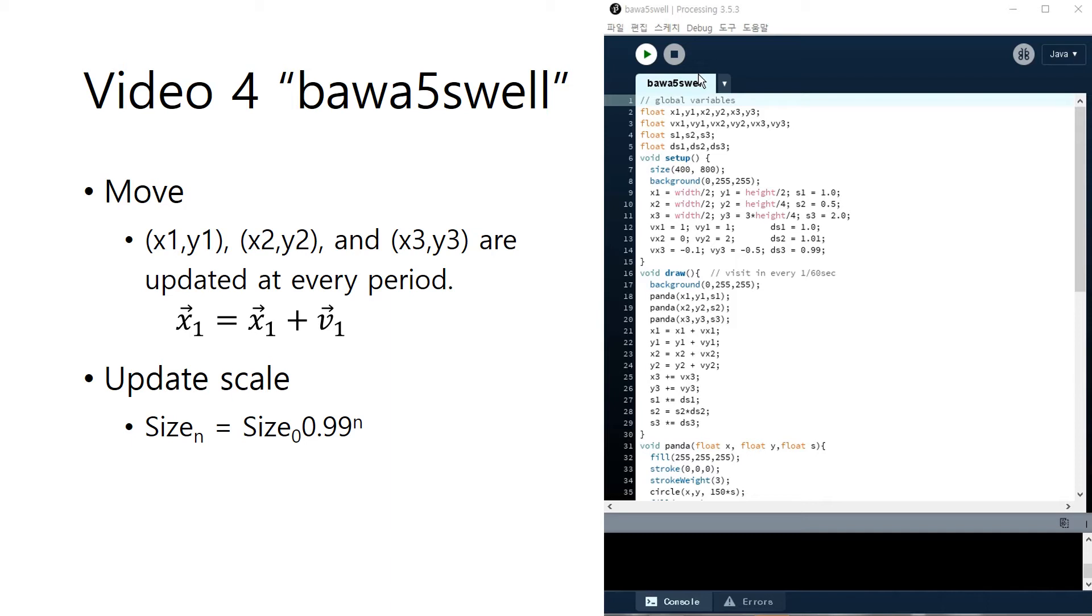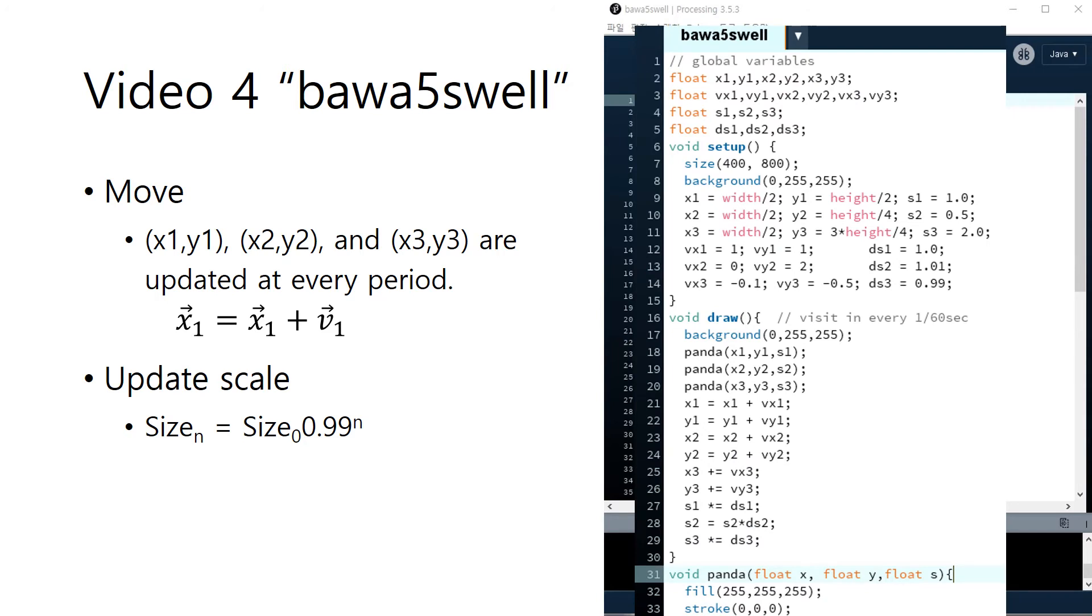Each panda needs six variables to implement this. So 18 variables are needed to implement three pandas. It is too complicated. The program looks too complex. It repeats something simple three times. Can this be a bit simpler?